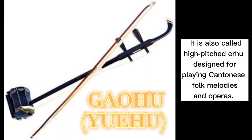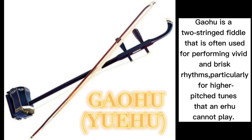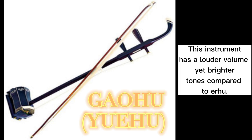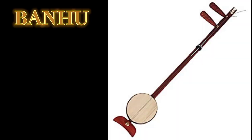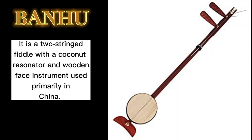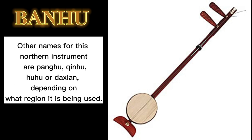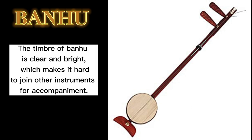The Gaohu, also called high-pitched Erhu, is designed for playing Cantonese folk melodies and operas. It is a two-string fiddle often used for vivid and brisk rhythms, particularly for higher-pitched tunes that an Erhu cannot play, and it has a louder volume yet brighter tones. The Banhu is a two-string fiddle with a coconut resonator and wooden face, used primarily in China. Other names for this northern instrument include Pangu, Xinhu, Huhu, or Daxian depending on the region; its timbre is clear and bright.